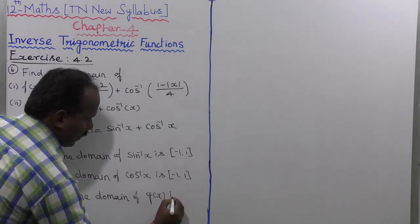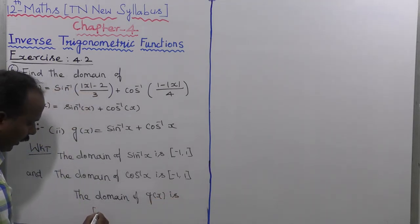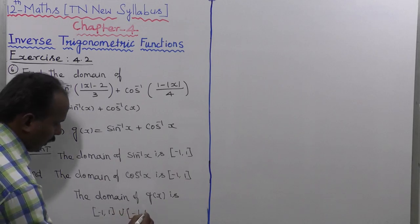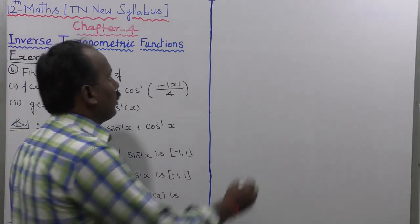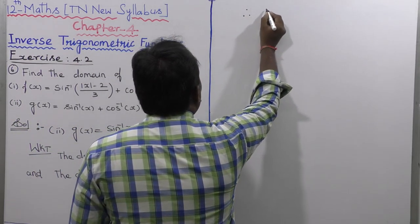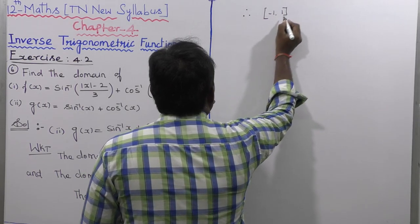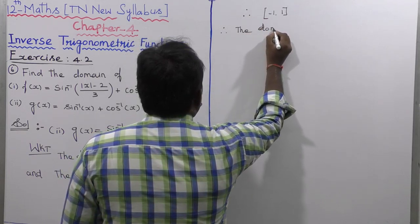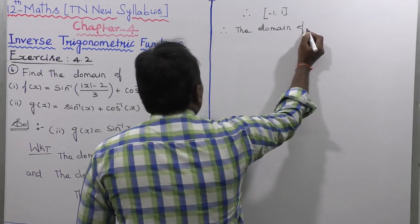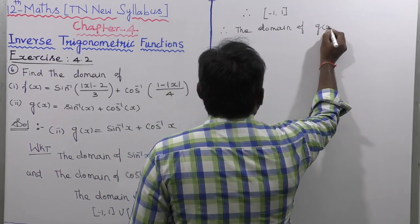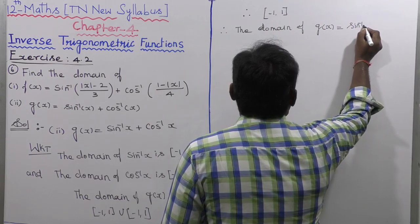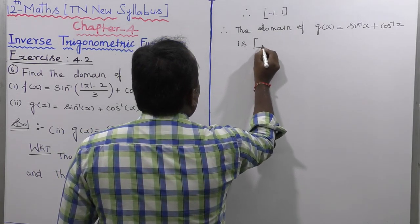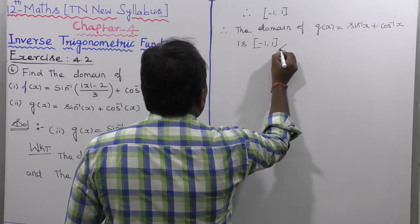The domain of g of x is minus 1 comma plus 1 union minus 1 comma plus 1. Therefore, the domain of g of x equal to sin inverse of x plus cos inverse of x is the closed interval minus 1 comma plus 1. That's all.